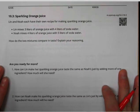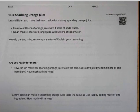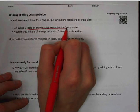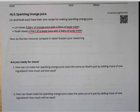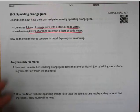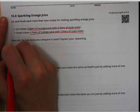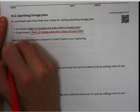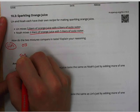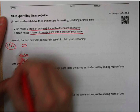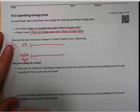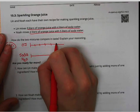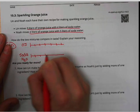On the next page: sparkling orange juice. Lynn and Noah each have their own recipe for making sparkling orange juice. Lynn mixes three liters of orange juice with four liters of soda water, and Noah mixes four liters of orange juice with five liters of soda water. We want to know how they compare in taste and how we know. So I'm going to draw some number lines here. This is for Lynn, and OJ and soda water. I'm going to put six tick marks: 1, 2, 3, 4, 5, 6.